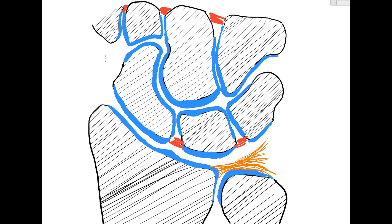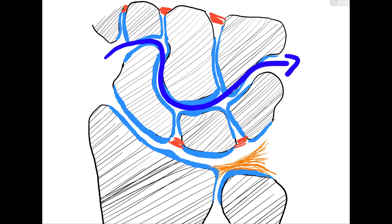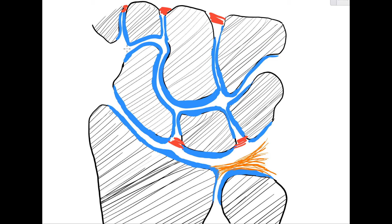The midcarpal joint is formed between the first and second row of the carpus. All the surfaces involved are covered in cartilage. The interosseous ligaments of the proximal row are located in the proximal region, and those of the distal row are located in the distal region. Thus, the midcarpal joint is a gliding surface in between the proximal and distal rows. The synovial capsule spreads along the articular surface and in between the bones, reaching as far as the respective interosseous ligaments.